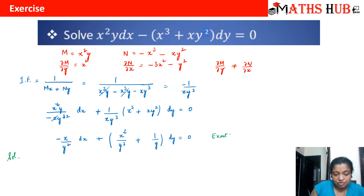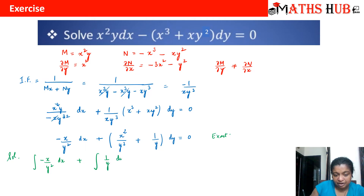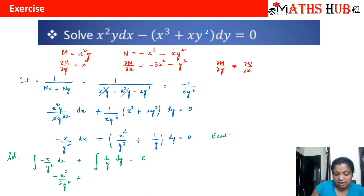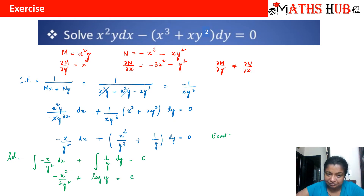Now what is the solution? For an exact differential equation, it is: integration of M with respect to x (treating y as constant) plus integration of terms of N not containing x, set equal to constant c. Integrating -x/y² dx gives -x²/(2y²). The term 1/y in N does not contain x, so integrating 1/y dy gives log y. Therefore: -x²/(2y²) + log y = c.